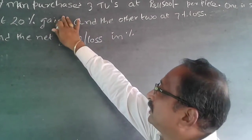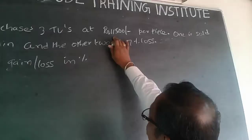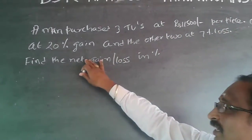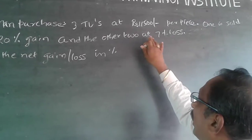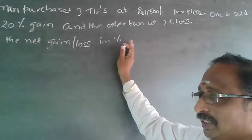The question is, a man purchases 3 TVs at Rs. 11,500 per piece, one is sold at 20% gain and the other 2 at 7% loss, find the net gain or loss in percentage.